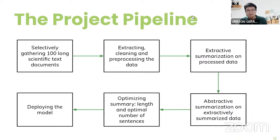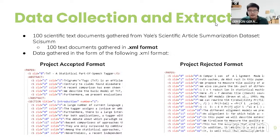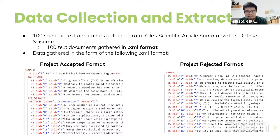Fifth, I try to optimize the model by asking it what the optimal number of sentences to summarize per document is — some documents need three sentences, some need five, seven, or ten, and it's different for every document. Finally, once I have the most optimized model, I deploy it using Streamlit. Now moving on to step-by-step discussion.